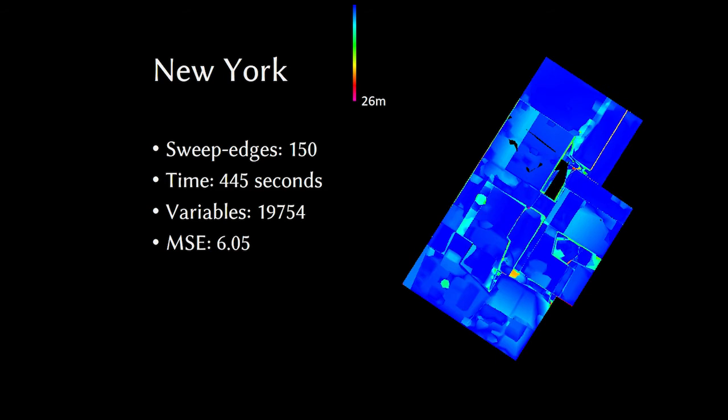We can look at some statistics for this result. There are 150 sweep edges. The optimization time was 445 seconds. The optimization contained about 20,000 variables and the mean squared vertical error was six meters. The linear error is shown on the right on this color plot. We can see that for most areas of the roof, we have very good representation of the geometry. Some areas in the interior, for example water towers, aren't well captured because the area parameter was not set low enough to capture these features on purpose.